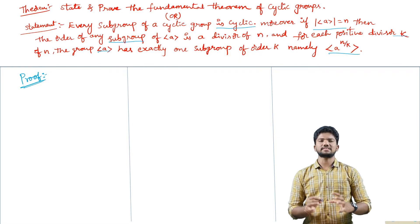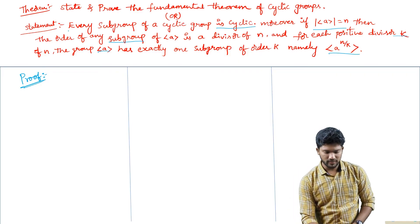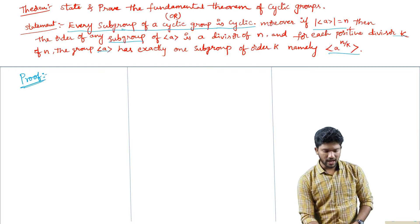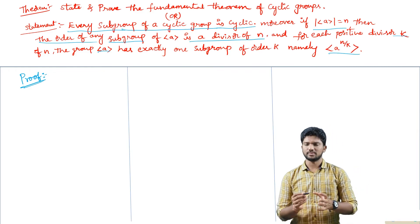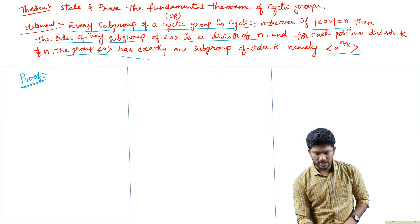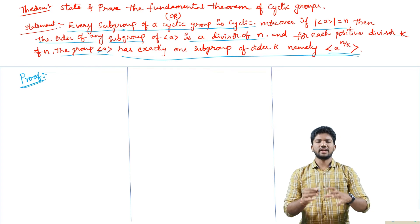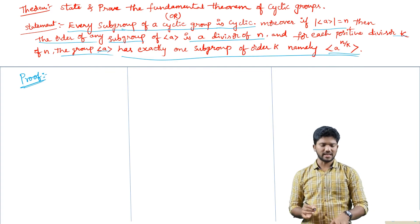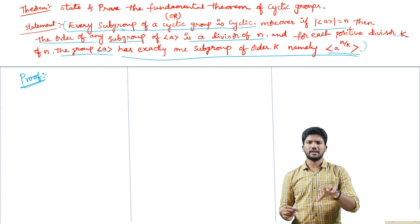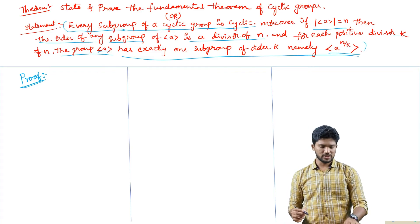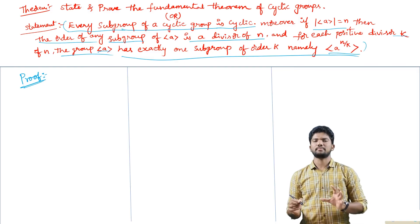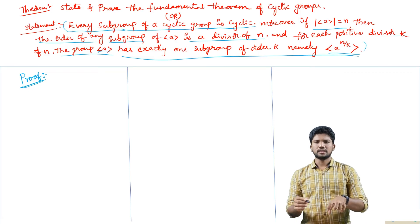If you observe carefully, we can divide this theorem into three parts. The first part is: every subgroup of a cyclic group is cyclic. The second part is: the order of any subgroup is a divisor of n, where n is the order of the group. The third part is: the cyclic group generated by A has exactly one subgroup of order k. In the examination, if they ask you to state and prove the fundamental theorem of cyclic groups, you have to write down the total statement from 'every subgroup' to 'the cyclic subgroup generated by A power n by k.'